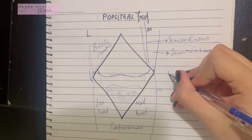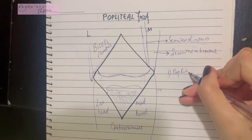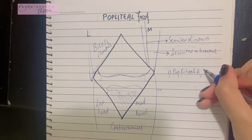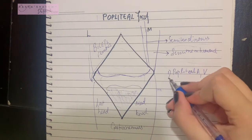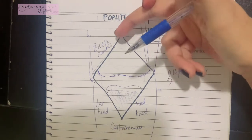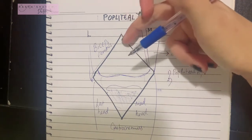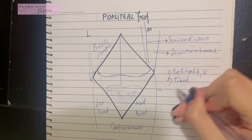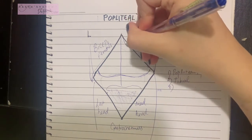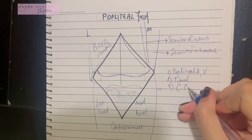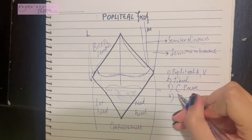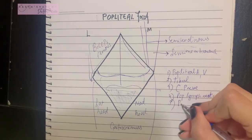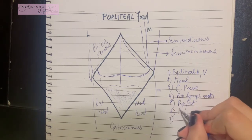The contents of the popliteal fossa include the popliteal artery, the popliteal vein. Additionally, the sciatic nerve terminates at the superior angle of this fossa by dividing into the tibial nerve and the common peroneal nerve — both of which are contents of the fossa. We also have the popliteal lymph nodes and the popliteal fat.